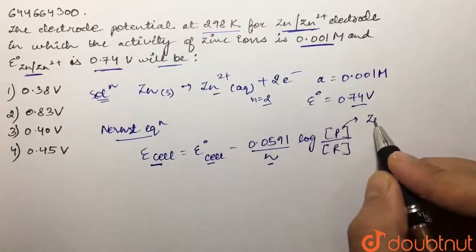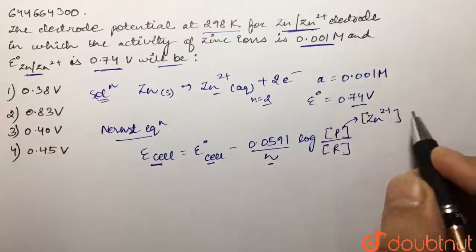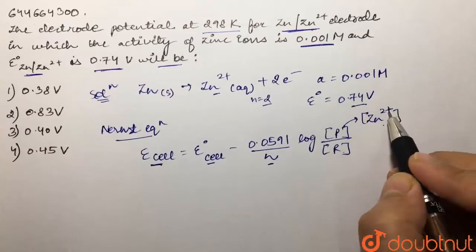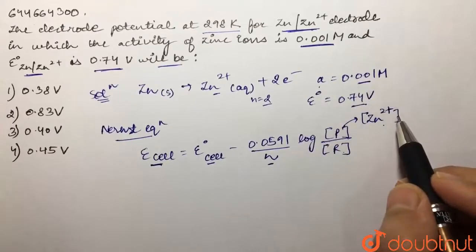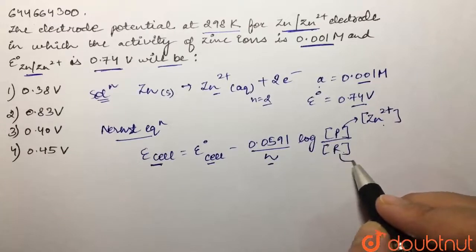Then we have concentration of products. Now product over here is zinc two plus aqueous, so in products we're going to have concentration of zinc two plus. The concentration is basically equal to activity, so this is our concentration that is given to us for zinc two plus ion.